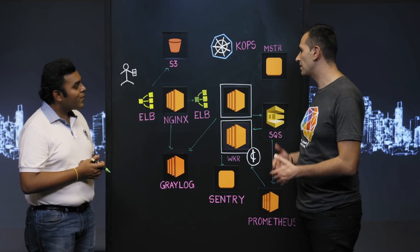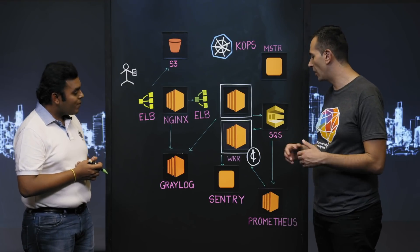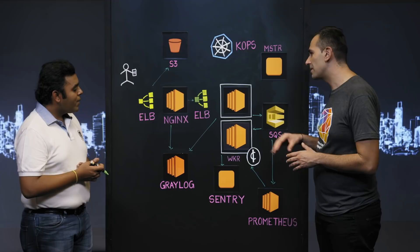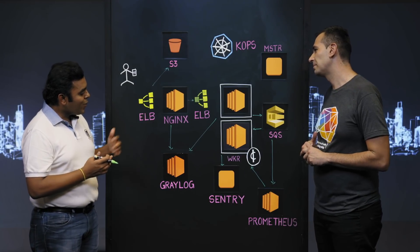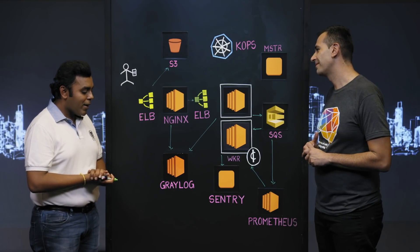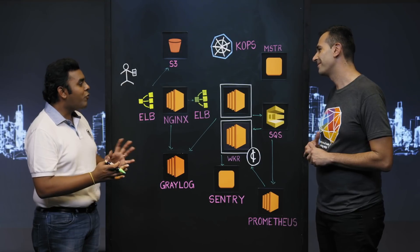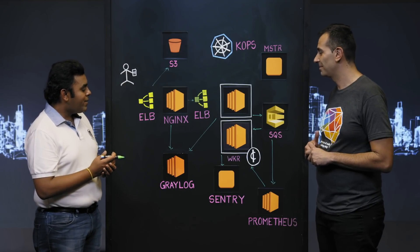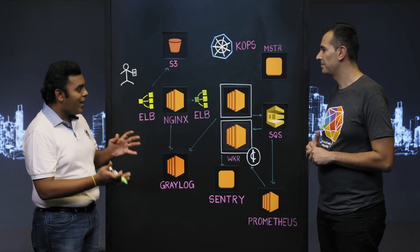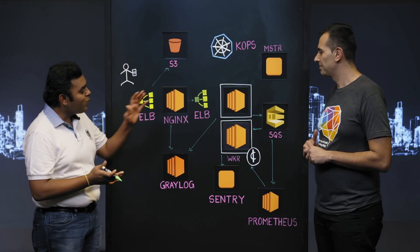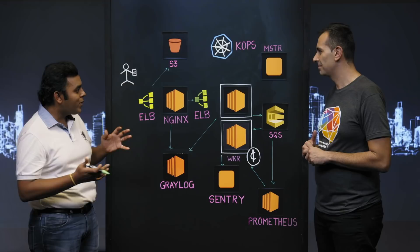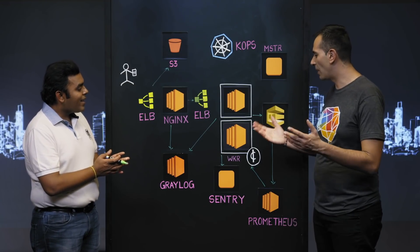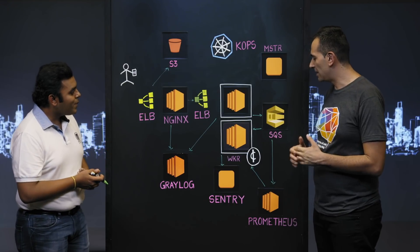So you're using Prometheus as a way to actually manage your load. What sort of cost benefit have you seen from this? With Kubernetes, we have been able to save more than 40% of the cost, because rather than having a different autoscaling group for each of the services, we have been able to consolidate them into one single cluster with larger instances.